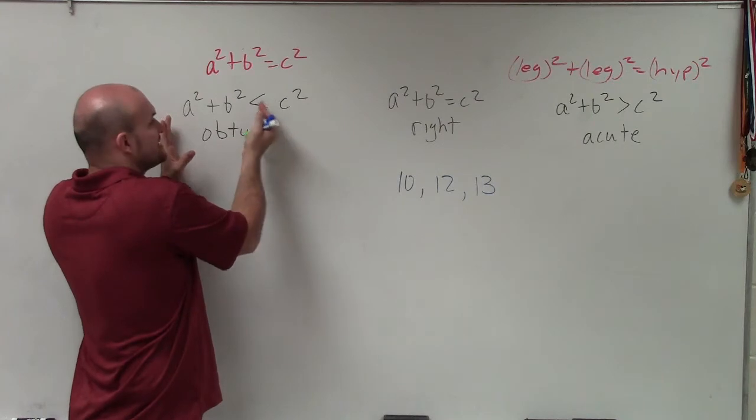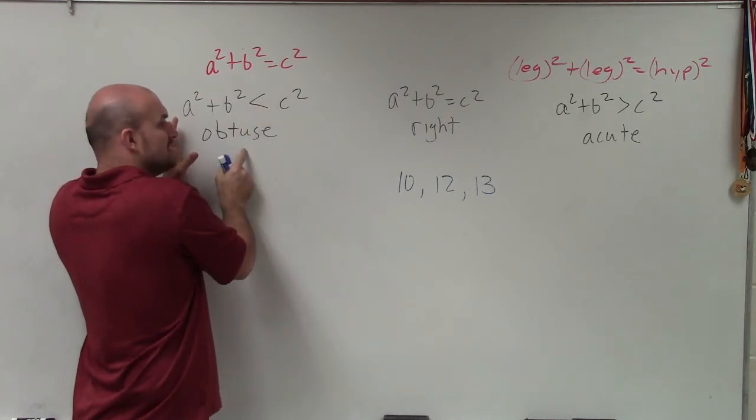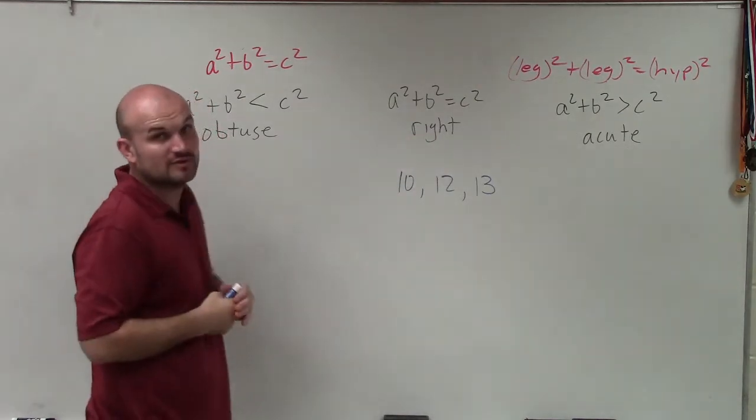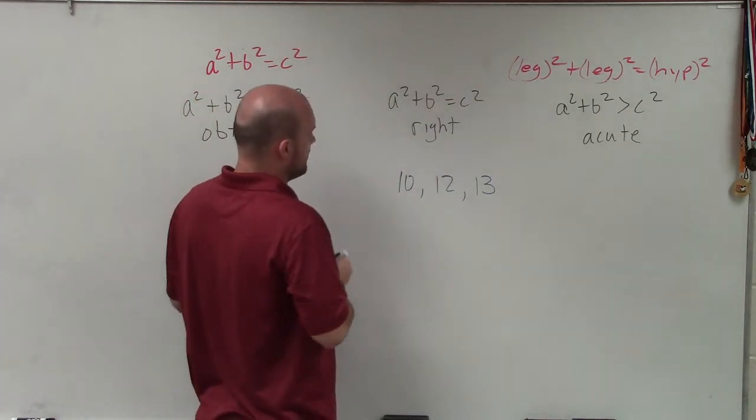If the sum of the legs is less than the hypotenuse, then it is an obtuse triangle. If it's greater than, then it's acute. And obviously, if it's equal to, then it's a right triangle.